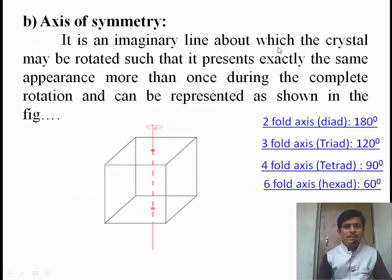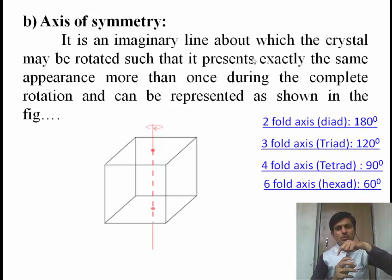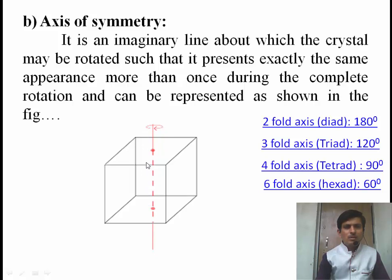The second symmetry is the axis of symmetry. Axis of symmetry is an imaginary line about which the crystal may be rotated such that it presents exactly the same appearance more than once during its complete rotation. That means through that axis, when the crystal is rotated through 360 degrees, if it shows the same appearance more than once, we say it has an axis of symmetry.